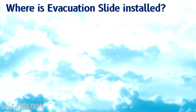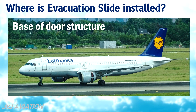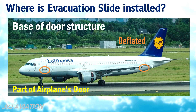Where is the evacuation slide installed? The evacuation slide is installed at the base of the door structure. Normally, the slide is completely deflated and comes as part of an airplane's door. If the height of the door from the ground is more than 6 feet, the slides must be installed on the door.